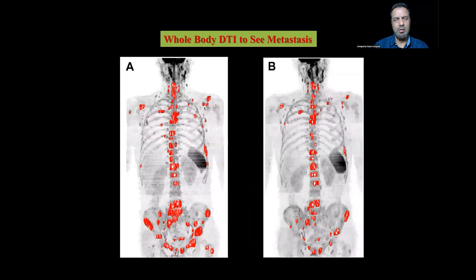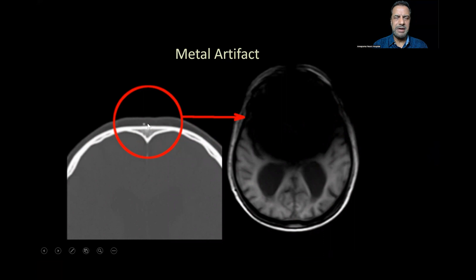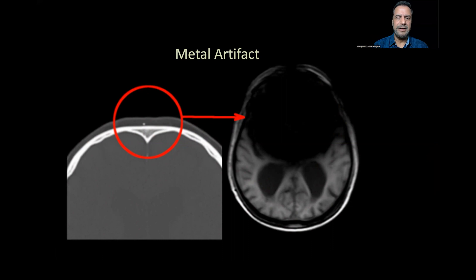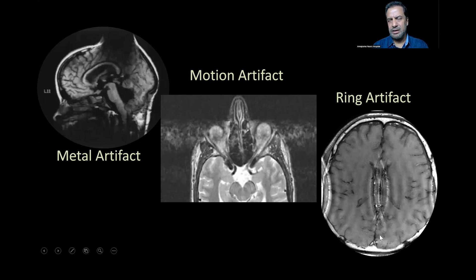Recently, whole-body DTI is also used to detect metastasis. Talking about artifacts, like in the previous lectures, a very small, subtle metal can cause a lot of metal artifact and make the MRI unreadable. We have to be careful about metals, dentures, and other things present near the magnetic field. There can also be motion artifact — if the eyeball is moving, you can see the motion artifact — and a ring artifact, which will decrease the quality of the MRI and make it impossible to interpret properly.